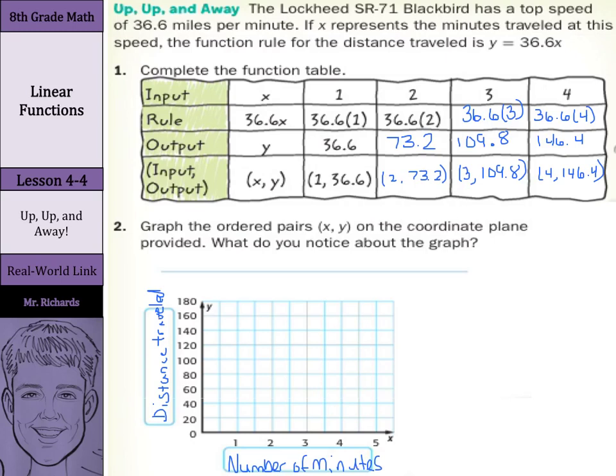So, as we go to make our graph, when we've gone 1 minute, we've traveled 36.6 miles. So that's going to be somewhere around here. Our 2 minutes is 73.2, so that's going to be right around this neck of the woods. For 3 minutes, we've gone 109.8, it's going to be somewhere along here. And lastly, our 4 minutes is 146.4 miles, right around here. What do we notice about the graph? Well, it appears that these points are in a straight line.